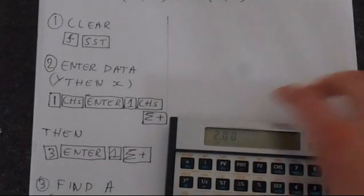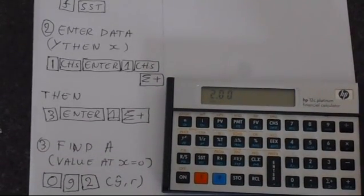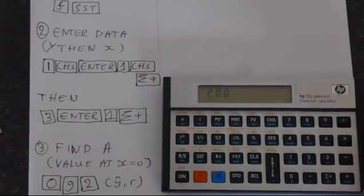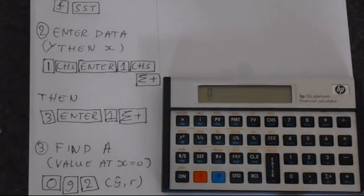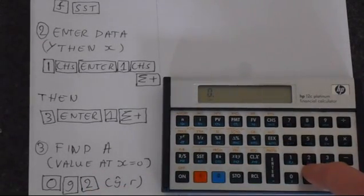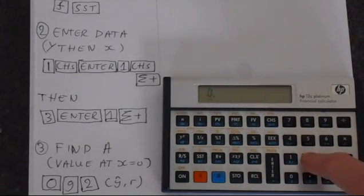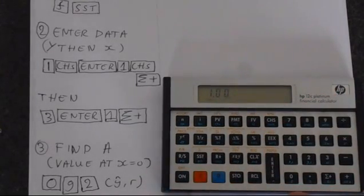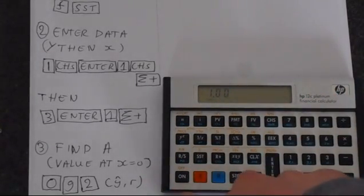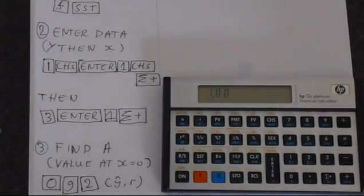So we can go straight ahead and find A. The observant among you will notice that the way to find A is to set x equal to 0 and find the value of our line. So simply press 0, and then this G button to access the blue functions, and then pressing number 2, we've got this YR function. This will find the value of our line at x equals 0, which is 1. So A equals 1, as we would expect. This line will be y equals 2x plus 1.